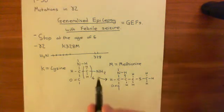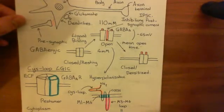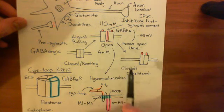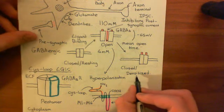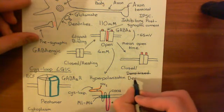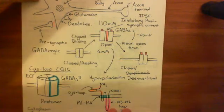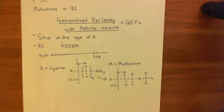Basically, what this mutation does is accelerate the rate of desensitization of the GABA-A receptor. GABA-A receptors with this mutant gamma-2 subunit undergo the process of moving from the open state to the closed desensitized state much faster. They move into the desensitized state much quicker, which means the amount of inhibitory postsynaptic current these mutant GABA-A receptors allow in is much reduced, because they are open for far less time. So this reduces GABAergic transmission.